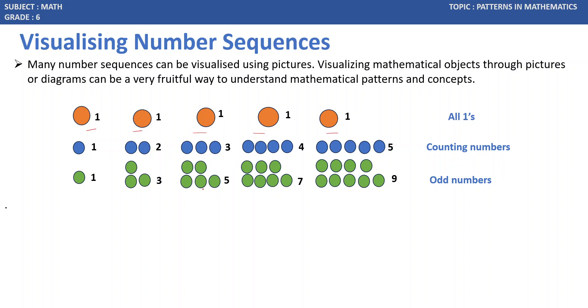The next sequence is 1, 3, 5, 7, 9. These numbers are called Odd Numbers.